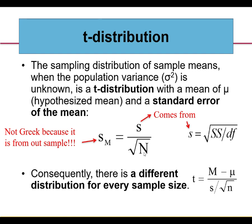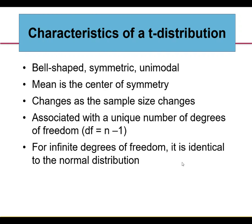Because the t-distribution is dependent on sample size, there's a different distribution for every sample size until you get to about 120, at which point it approximates the normal distribution and t and z scores are pretty much synonymous. The formula is exactly the same as the z-formula: t equals the sample mean minus the hypothesized population mean, over the standard deviation divided by the square root of the sample size. We'll do all of this in SPSS.